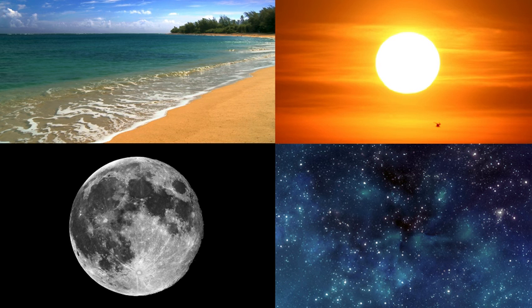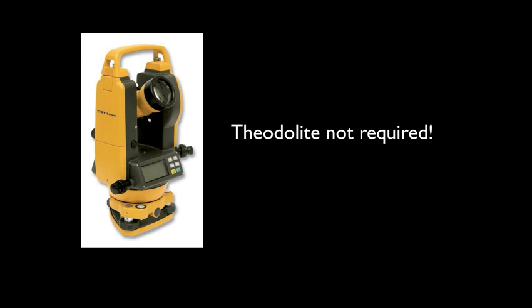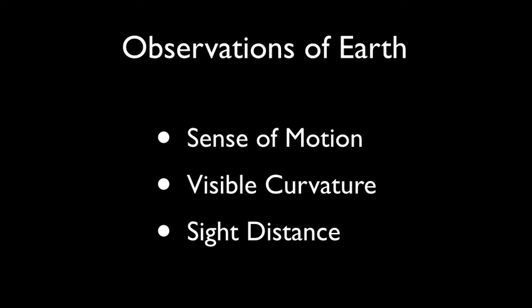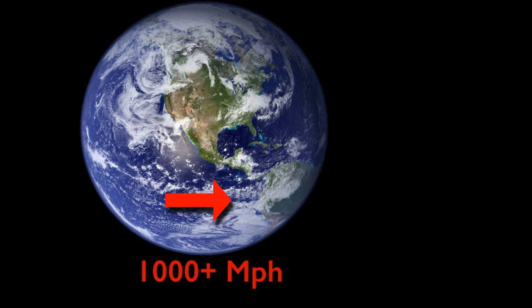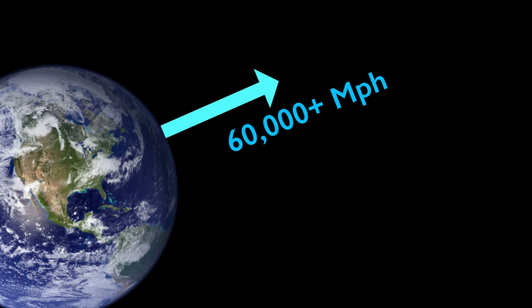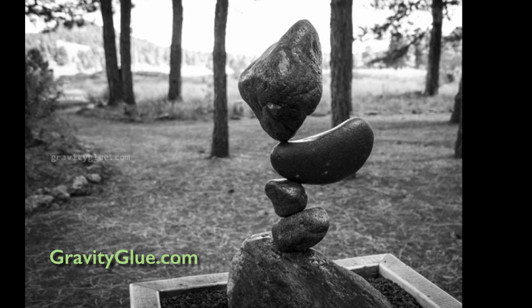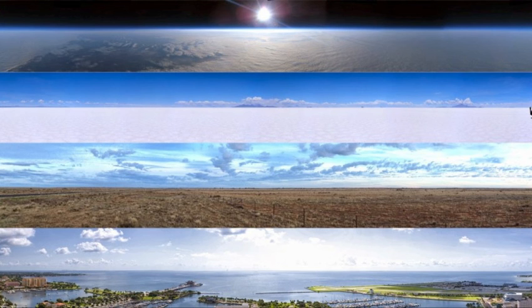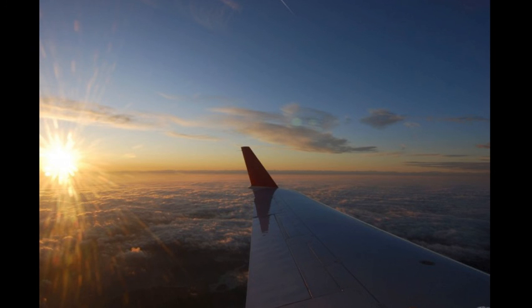So, which is it? To repeat, we can determine the shape of our world — flat or globe — through careful observations of the Earth, Sun, Moon, and stars. There are three main observations you can pursue without equipment: sense of motion, visible curvature, and sight distance. If we live on a spinning ball which moves over 1,000 miles per hour at the equator and over 60,000 miles an hour around the Sun, do you feel the motion? If not, this supports the stationary flat Earth model. If we live on a globe, shouldn't we be able to see the curvature of the horizon? Even commercial flights at 40,000 feet cannot detect the curvature of the horizon, further suggesting a flat Earth.